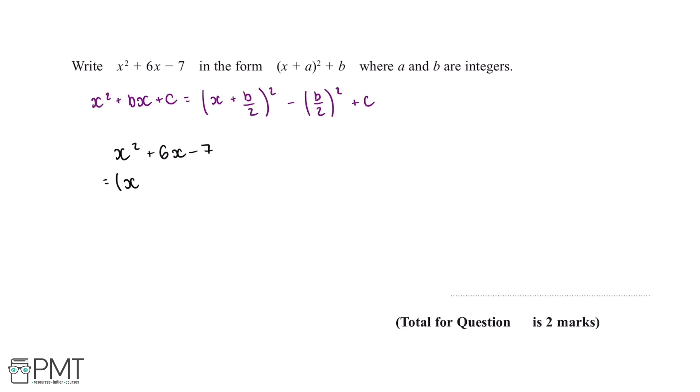Then we have this b over 2 up here. What we're going to do is half the coefficient of the x term, which gives us plus 3. Then we'll close the brackets and square all of this.